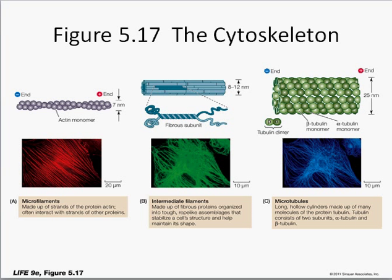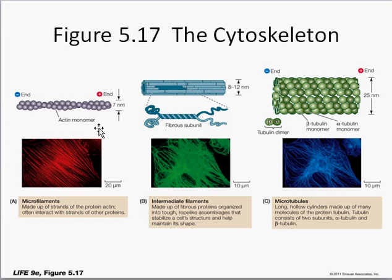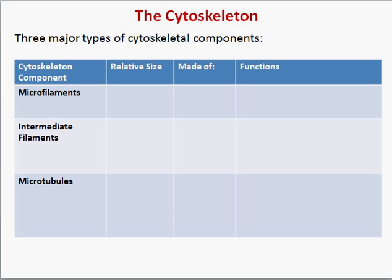There are three major components to the cytoskeleton: microfilaments, intermediate filaments, and microtubules. I want you to know their basic size, what they're made out of, and what they function as. Microfilaments are the smallest, microtubules are the largest — if you think tubes are big, filaments are small — and in between are intermediate filaments.